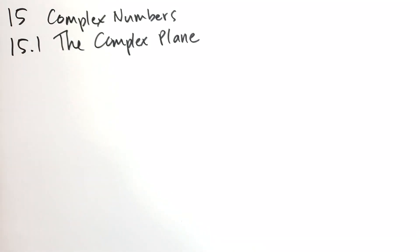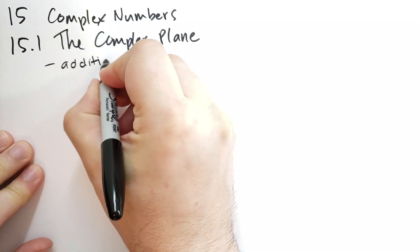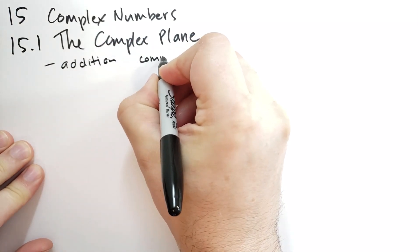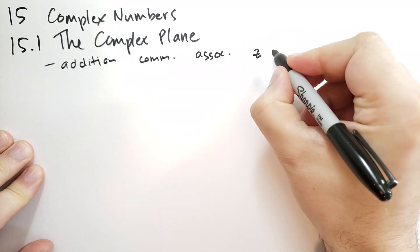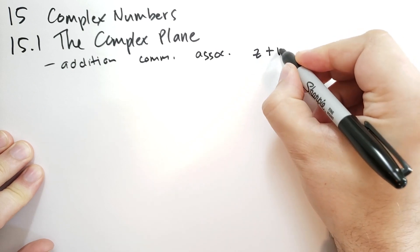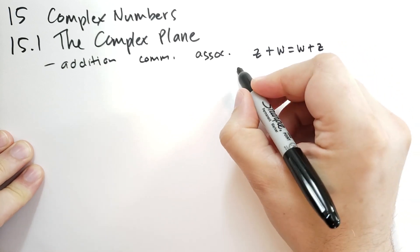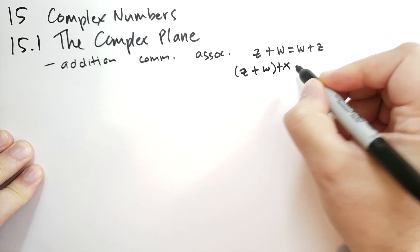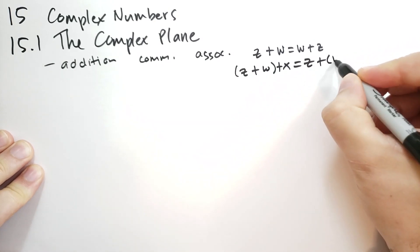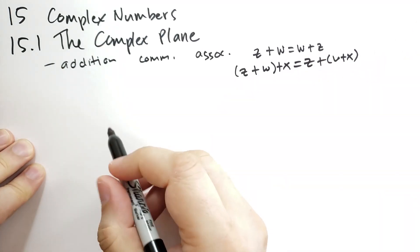He starts off just assuming that the complex numbers exist, and says the complex numbers satisfy the following conditions. Addition is commutative and associative. Commutative means if you have a complex number Z plus another complex number W, that's going to be the same as W plus Z. Associative means if you have three complex numbers, Z plus W plus X, that's the same as Z plus W, quantity, plus X — so it doesn't matter which one you add first. The same goes for multiplication.